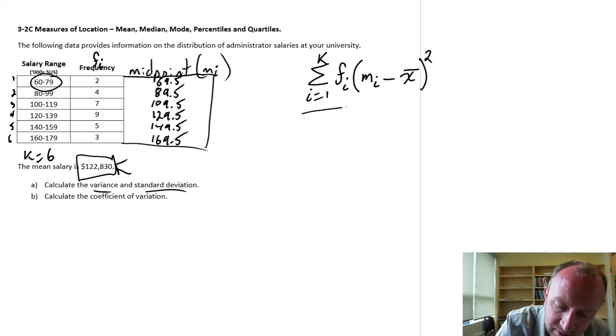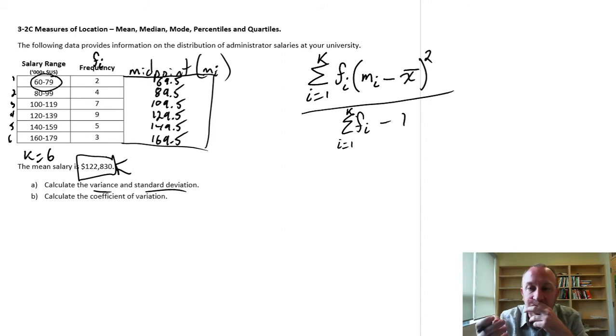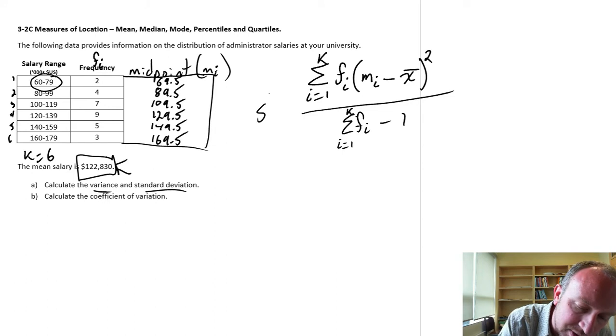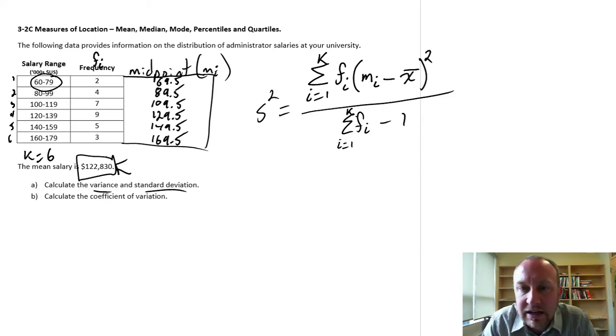And then, as we've done with other measures of variance, we divide that by n minus 1, which is now, in this case, going to be equal to the sum of those frequencies, i equals 1 through k minus 1. So a little bit different, but it's essentially a very similar calculation to what we did before, except we're using midpoints, and we're weighting it by the number of observations within that class, or that corresponds with that midpoint. So here's our formula for the variance using the classes of this frequency distribution.